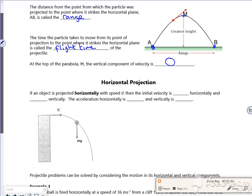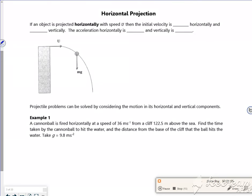Right, horizontal projection then, let's have a go at this. So if an object is projected horizontally with speed u, then the initial velocity is u horizontally and zero vertically. It's initially being fired, doesn't matter what happens after it, initially it's being fired with just u and zero vertically.